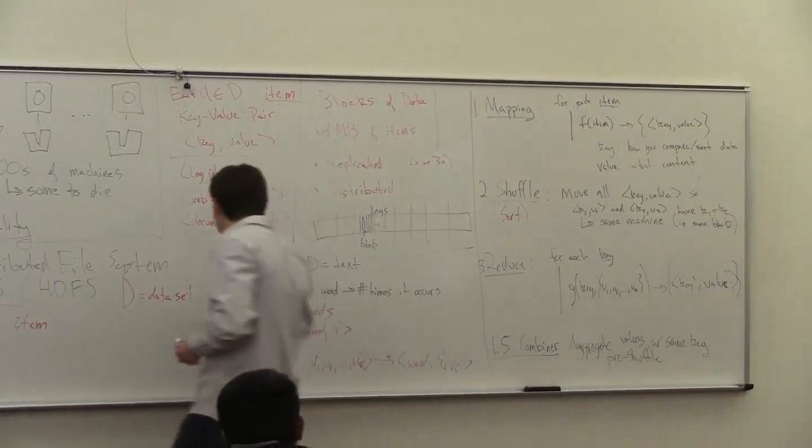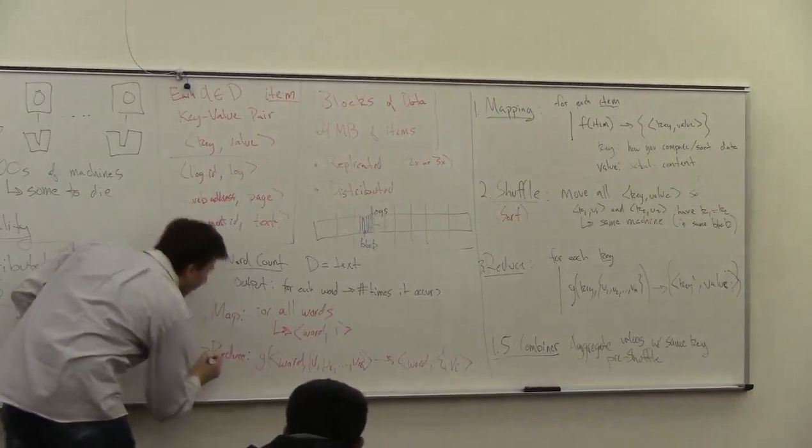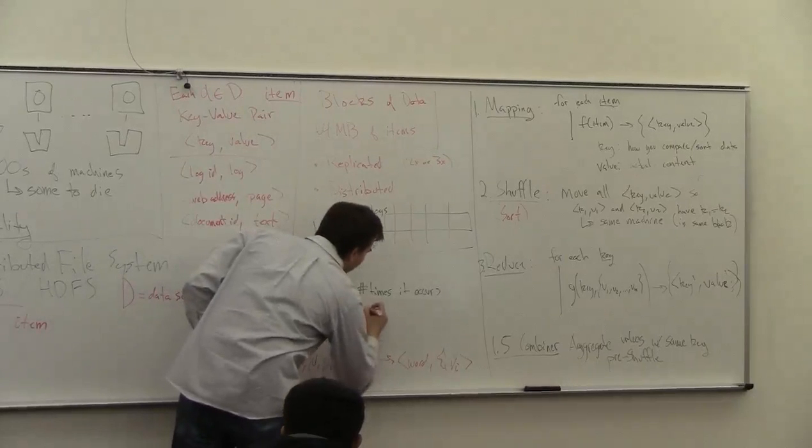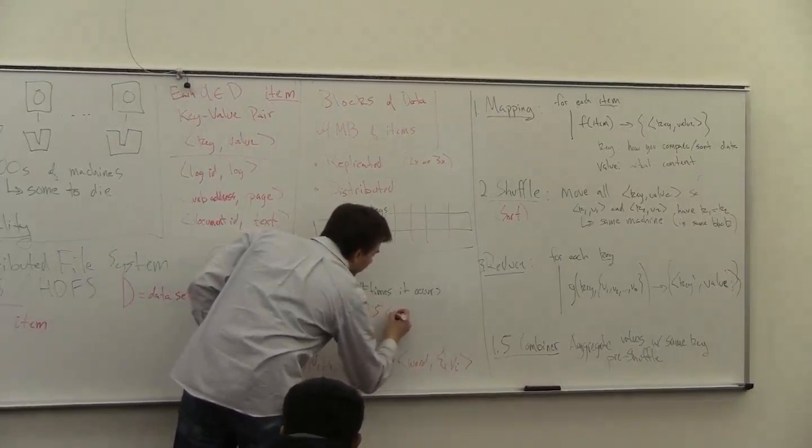So you can have phase 1 here, phase 3, and then you have phase 1.5, which is the combiner.